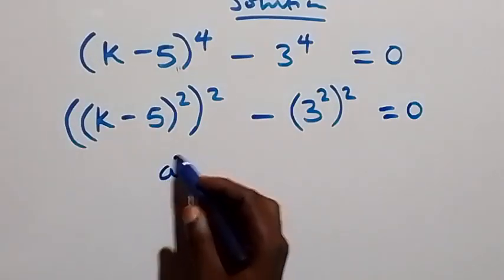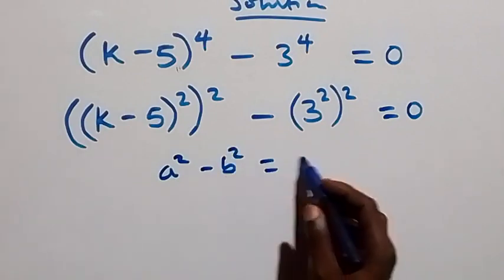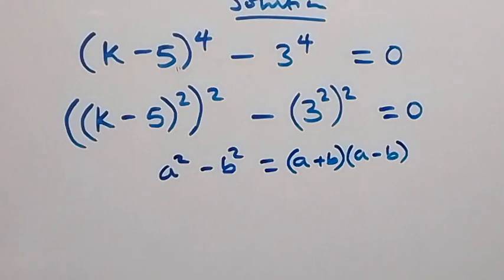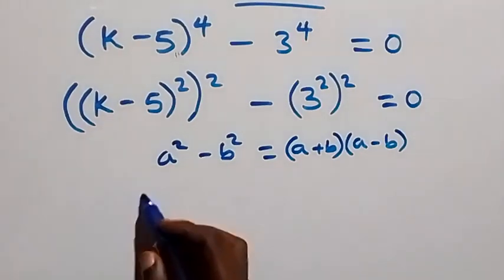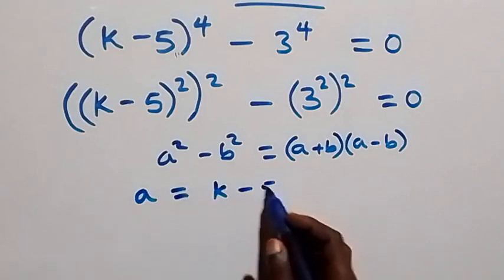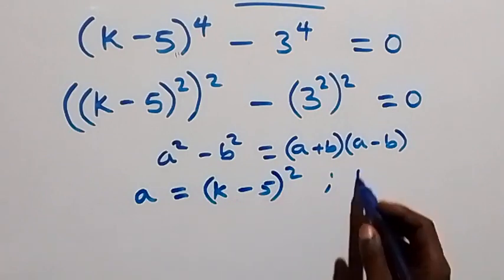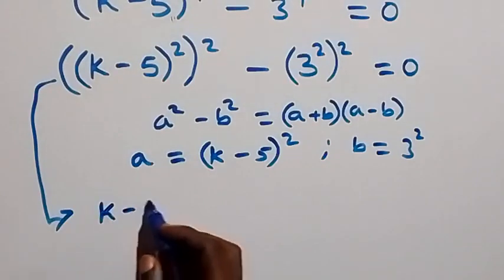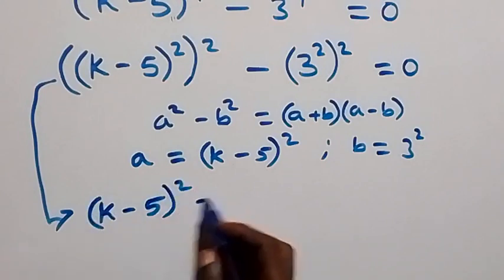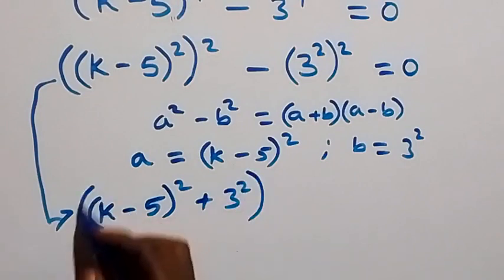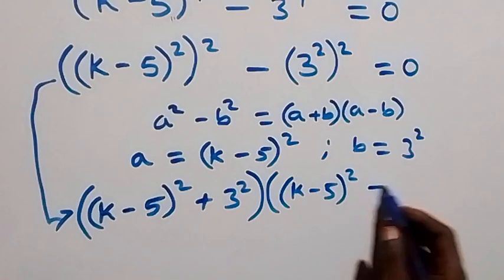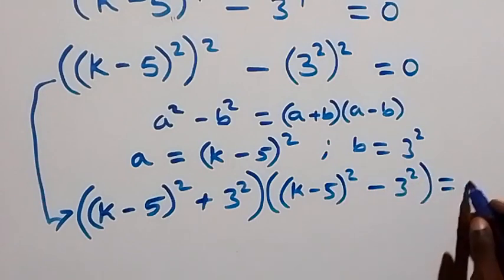This follows from a squared minus b squared, which is equal to (a plus b)(a minus b). We compare a to be k minus 5 squared, and b to be 3 squared. Then the equation becomes: (k minus 5 squared plus 3 squared) into brackets times (k minus 5 squared minus 3 squared) equals to 0.